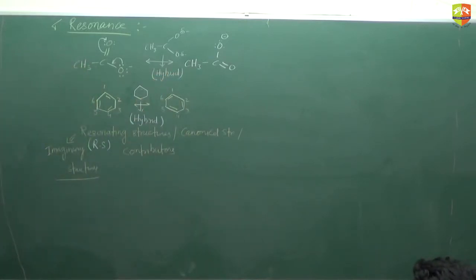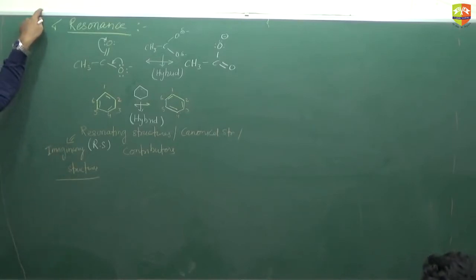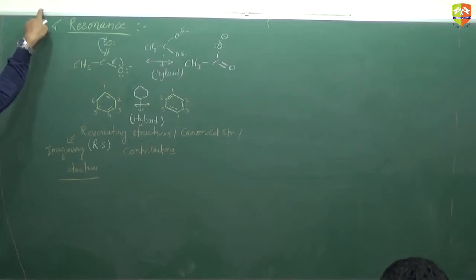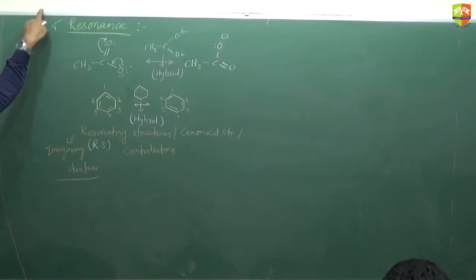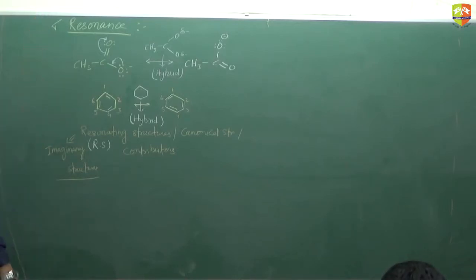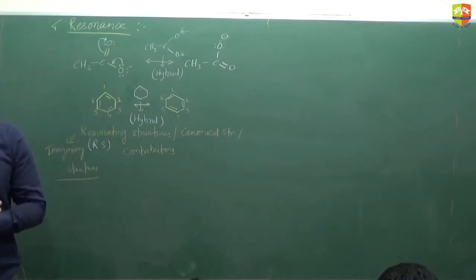All these things we have discussed already in chemical bonding. Now the next question is: in which molecules is resonance possible? When you draw the resonating structure, you should first understand whether resonance is possible or not. For that, we have certain conditions that must be satisfied by the molecule or ion. In all conjugated systems, resonance is possible.